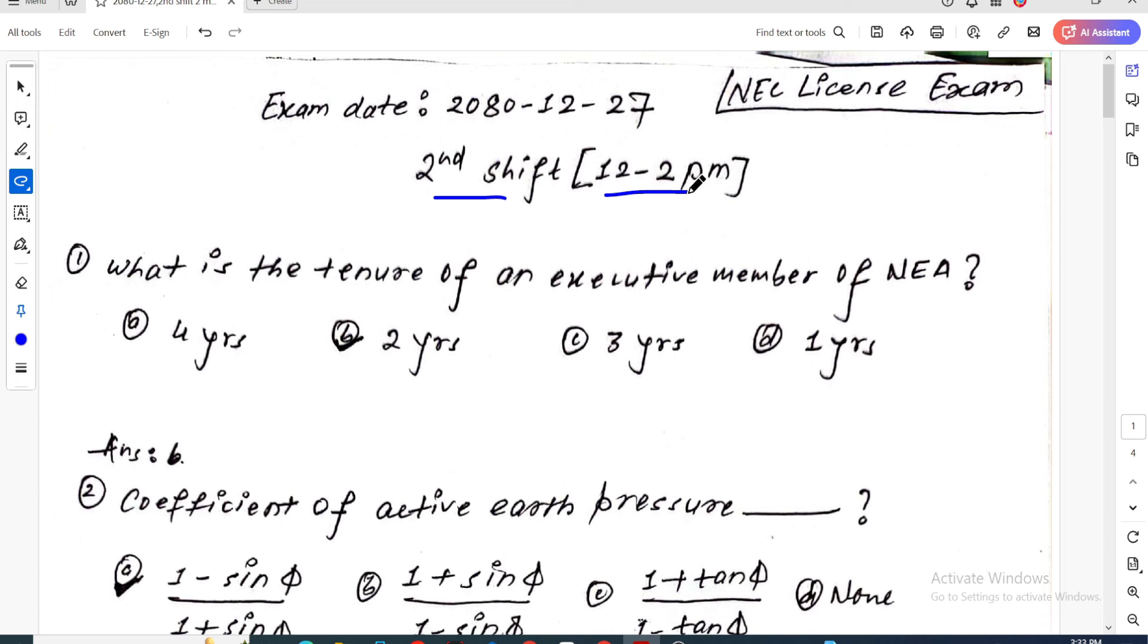Previously I covered this in my YouTube playlist. The NEA license exam for civil engineering is coming. The second shift, total time is 2 PM. The shift has two mark questions, with both numerical and theoretical types. I will now explain which questions should be done and the most useful practice.